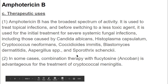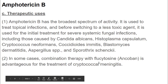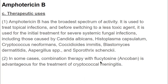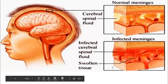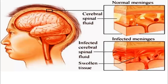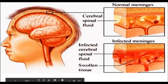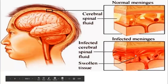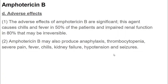Amphotericin B is an antifungal drug, and flucytosine is used in combination with it because it enhances its function. Cryptococcal meningitis refers to inflammation of the meninges - you can see normal meninges are not inflamed, whereas infected meninges are inflamed with infected cerebrospinal fluid and swollen tissues. This fungal infection is very injurious, and to treat it we use amphotericin B along with flucytosine.